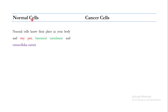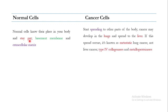Another important difference is that normal cells remain in place in the body because they stick to the basement membrane, and the extracellular matrix keeps normal cells in a particular position. Cancer cells, however, start spreading to other parts of the body. For example, cancer that develops in the lungs can spread into the liver — this is called metastatic lung cancer, not liver cancer, because the primary tumor originated in the lung.